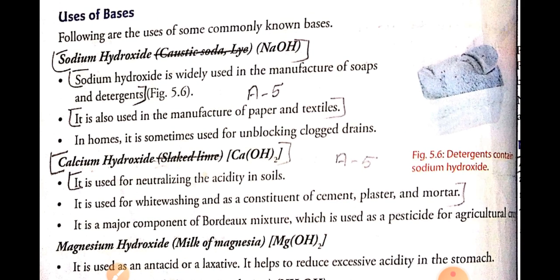Now we will see some uses of bases. The first is sodium hydroxide, which we are very familiar with. It is used in the manufacture of soap and detergent, and also to manufacture paper and tiles. At home, it is sometimes used for unblocking clogged drains.